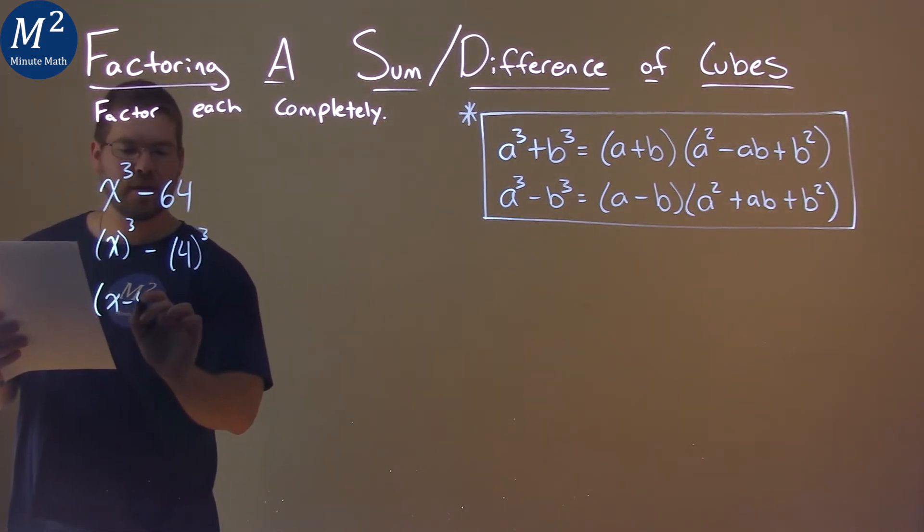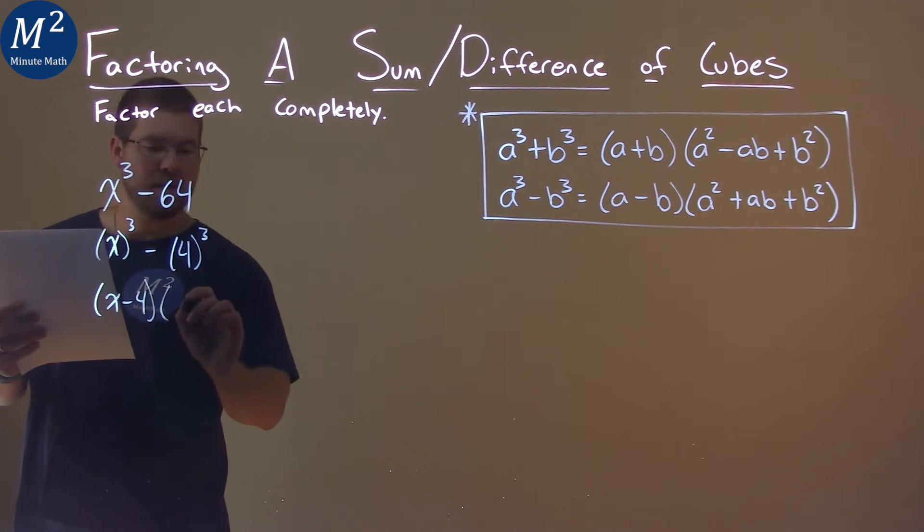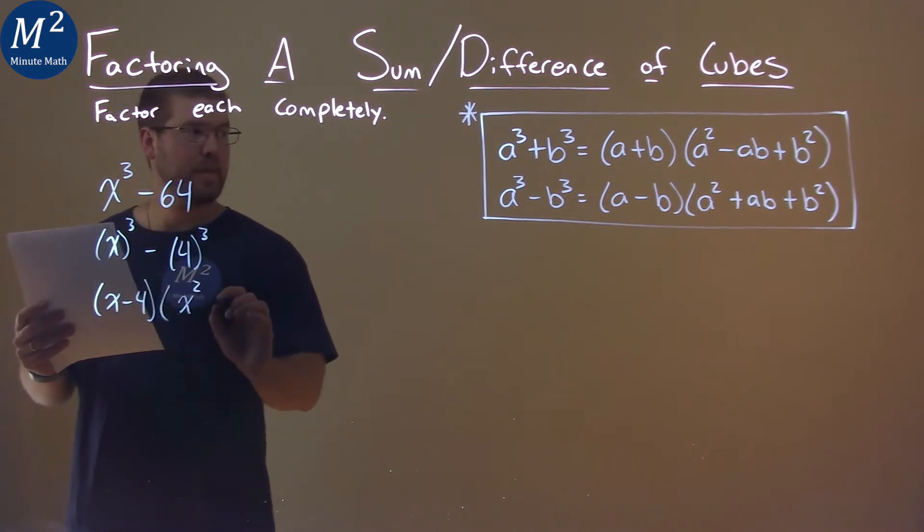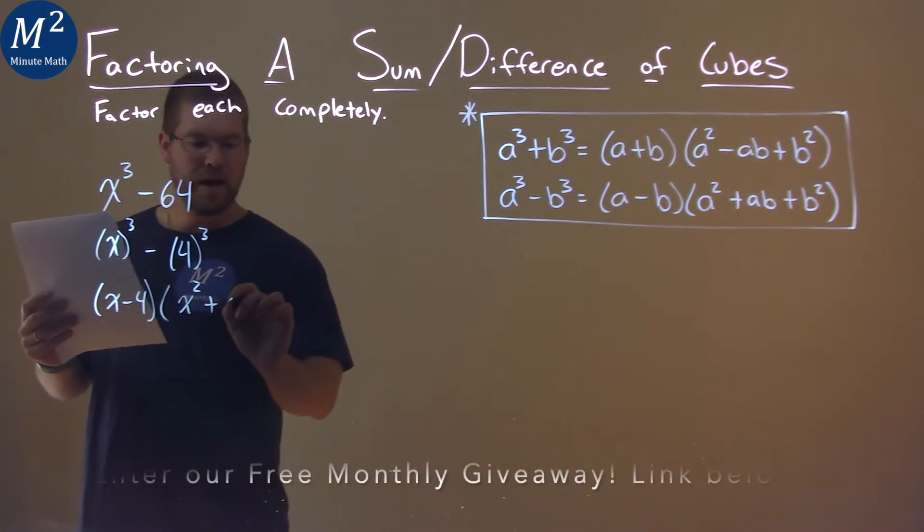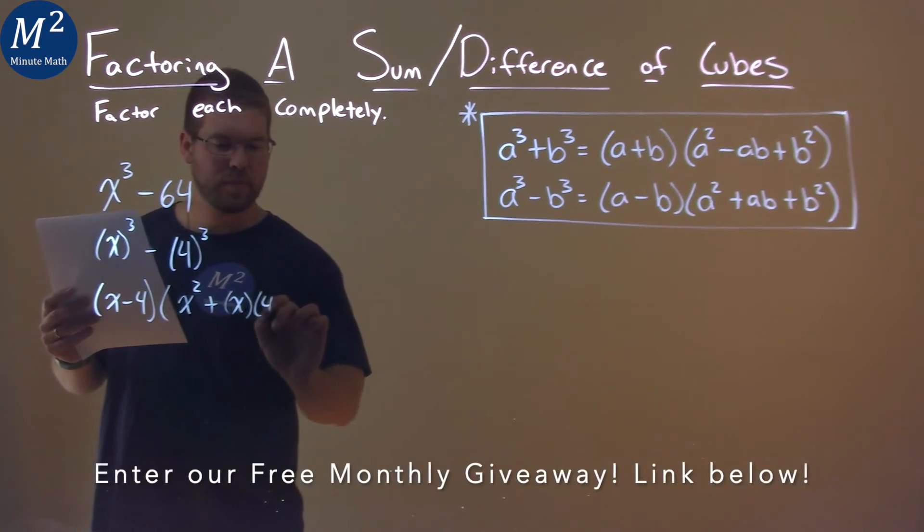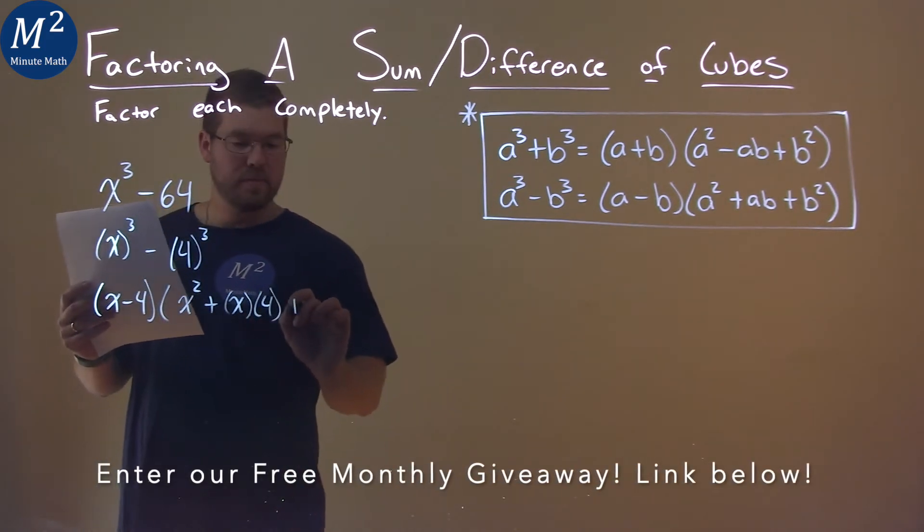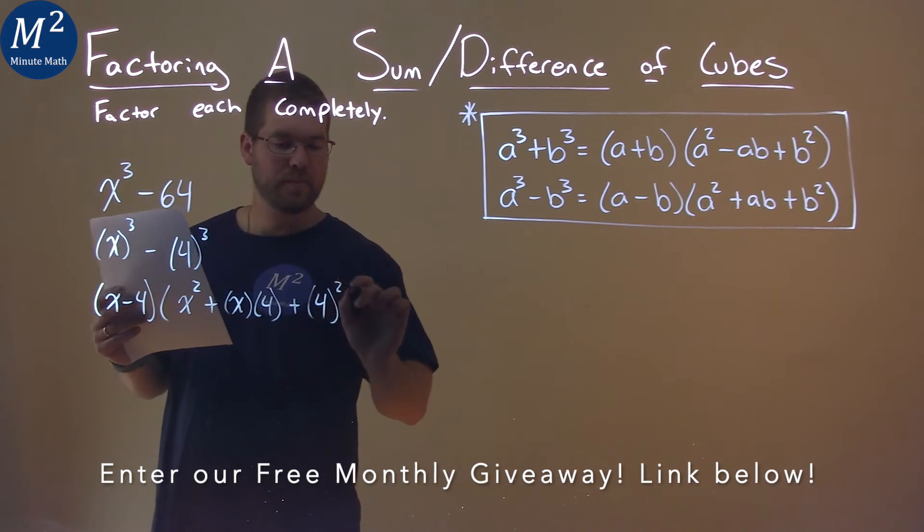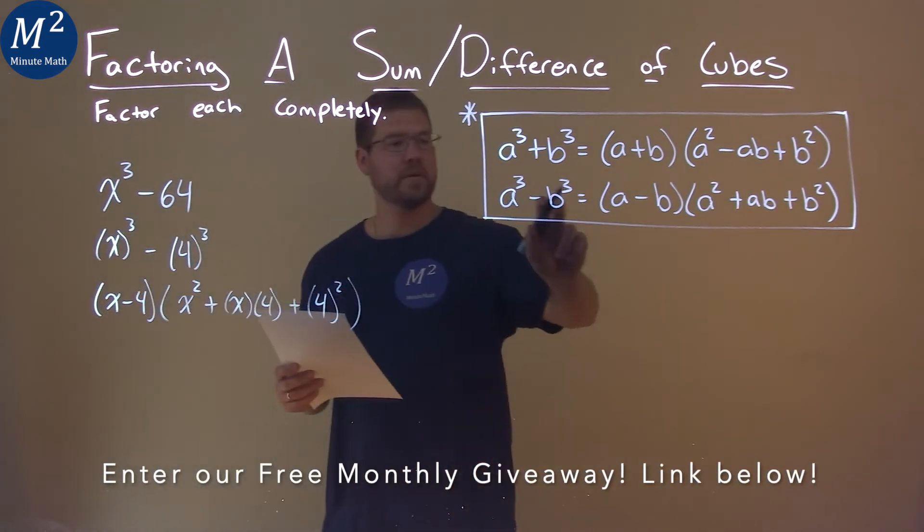We have an x minus 4 here times, it will be x squared plus x times 4 plus, well, 4 squared. So we're just following the formula here.